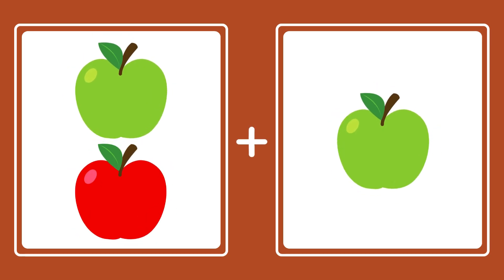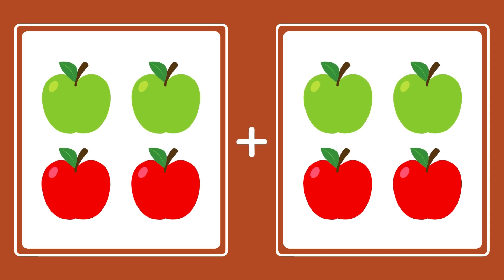Let's see the next question. Two apples plus one more apple will make three apples. Let's see the next one. Four apples and four more apples — the answer is eight apples. Good job.